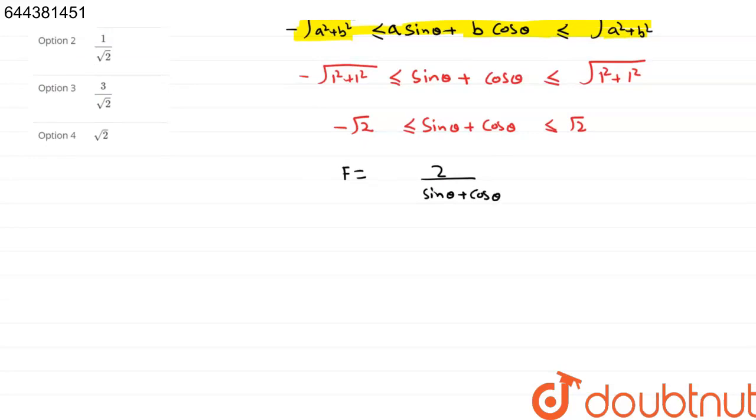So for a minimum value of f, this sin theta plus cos theta should be maximum, so that only f will be minimum. When the denominator will be maximum, then only f will be minimum. So what is the maximum value of sin theta plus cos theta?